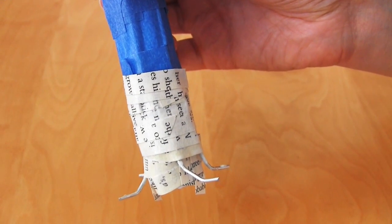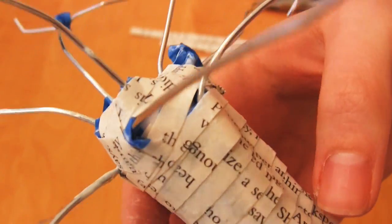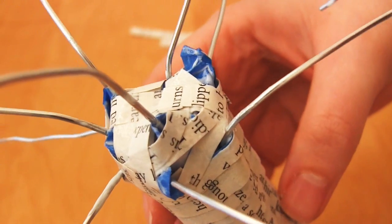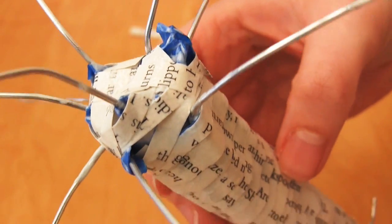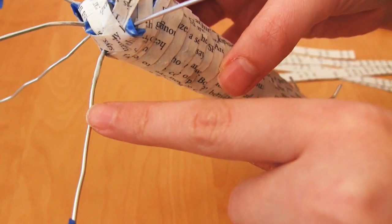So while you're doing this paper mache technique, if there are any places of the tree that you want to add bulk to, if you want to change the shape of anything, then you use scrap paper. So what I did was roll scrap paper around the branches.